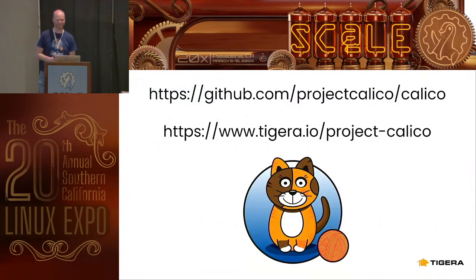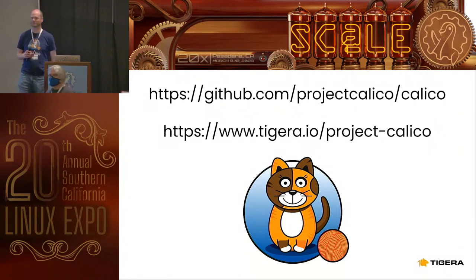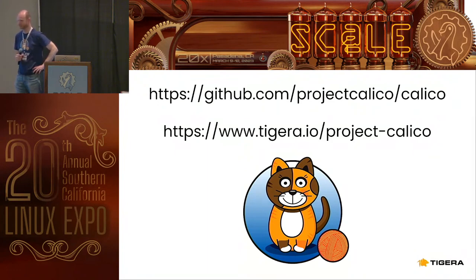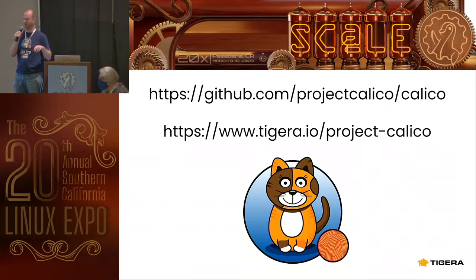Q: Is there a user space data plane for Calico coming up? A: It's already there — it was contributed by Cisco. It's not maintained by us as a company per se, but yes, it's fast user space packet processing using VPP.